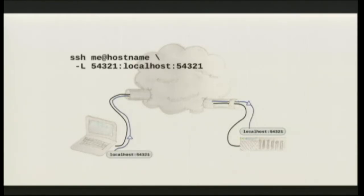And this is what that looks like. So now, when I access port 54321 on localhost — here is my actual laptop — my request is sent transparently through the tunnel until it pops out onto the other side, where it appears to have come from the remote machine itself.